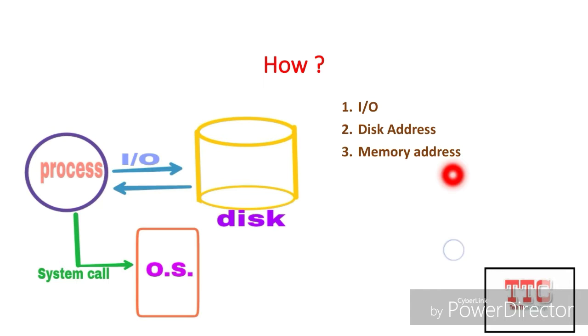It is the main memory address. If the process wants to read the information from the disk, it will need some main memory address. So the information will transfer from disk to main memory. And the last is how many number of bytes transfer to or from disk.